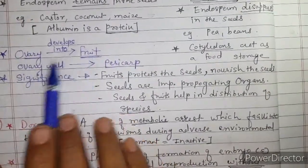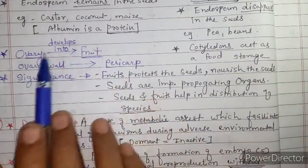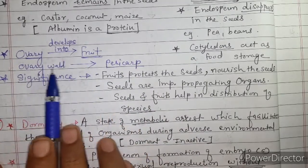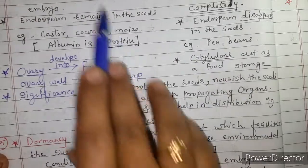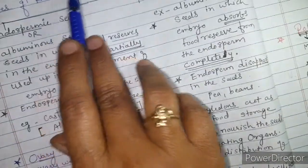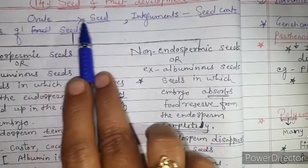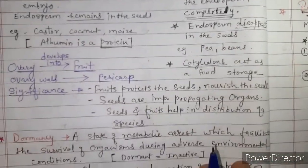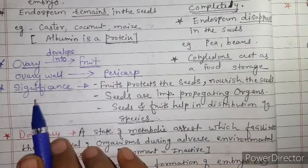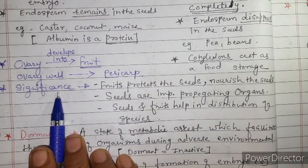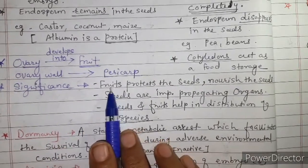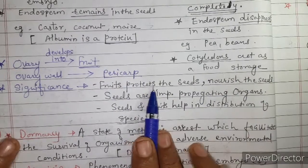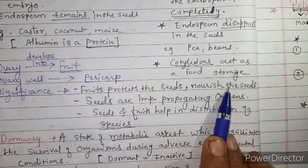Now, as I told you in the last period, after fertilization the ovary develops into a fruit, the ovary wall develops into pericarp, and the ovule develops into the seed. Fruits protect the seeds — seeds are present inside fruits — and the fruits also nourish the seeds.